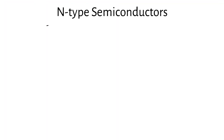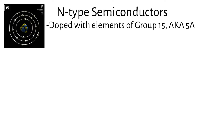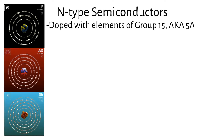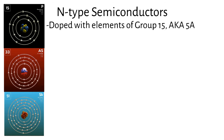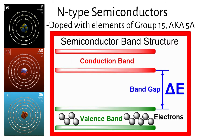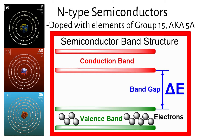N-type semiconductors are doped with elements from group 15 (also known as 5A) of the periodic table, such as phosphorus, arsenic, or antimony. These elements have five valence electrons, one more than silicon. The extra electron becomes a free carrier, increasing the material's conductivity by providing more electrons in the conduction band. In n-type semiconductors, free electrons are the majority carriers moving through the conduction band.